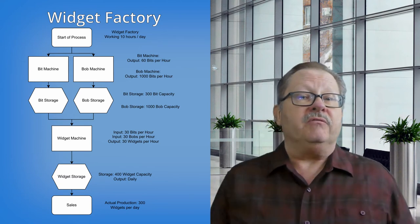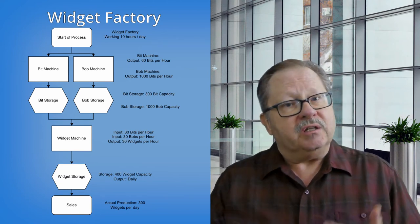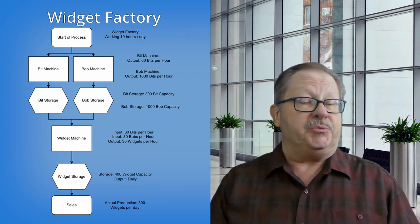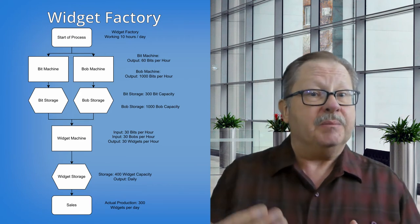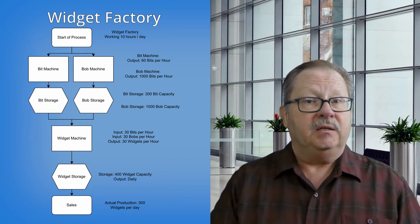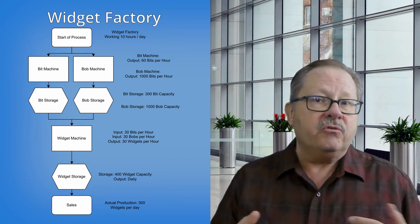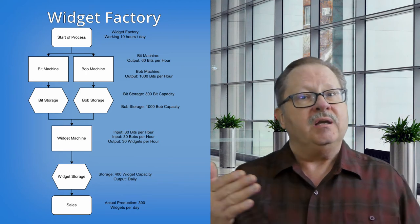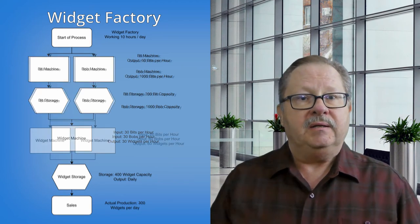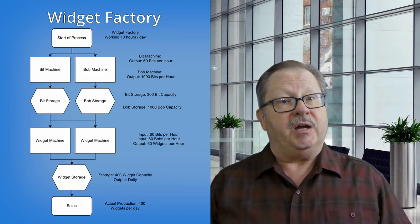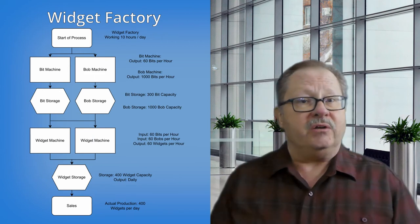The widget machine is now working at full capacity. It is still our constraint because the bit machine can supply 600 bits per day. And remember, we can sell up to 600 widgets per day. So step four is to elevate the constraint. We increase our capacity by purchasing a second widget machine. The combined output of these machines is now 60 widgets per hour.